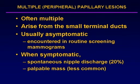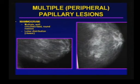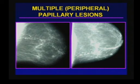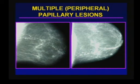Moving on to multiple peripheral papillary lesions — as their name states, they are often multiple. They arise from the small terminal ducts. Usually the patient is asymptomatic and these are encountered on routine screening mammograms. When symptomatic, patients can present with spontaneous nipple discharge about 20% of the time, and less commonly with a palpable mass. On mammogram they can be seen as multiple well-circumscribed round masses, typically in a lobular distribution. This is the classic imaging appearance — multiple peripheral papillomas. Here is another beautiful example with multiple well-circumscribed nodules, some displaying coarse heterogeneous calcifications, almost appearing to hang off a dilated duct.